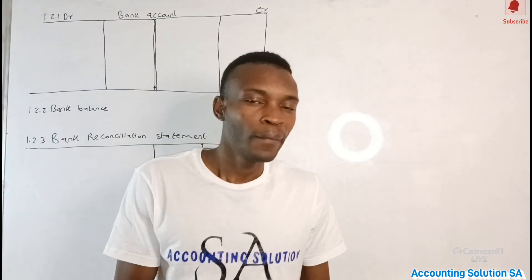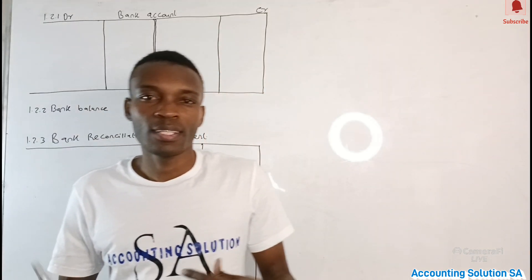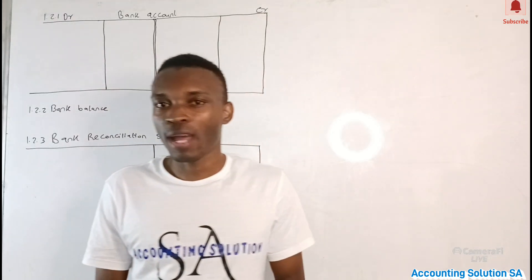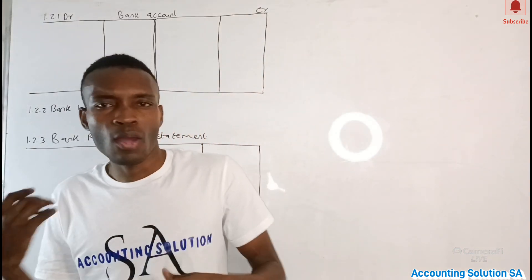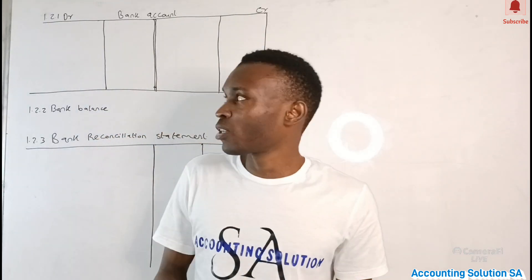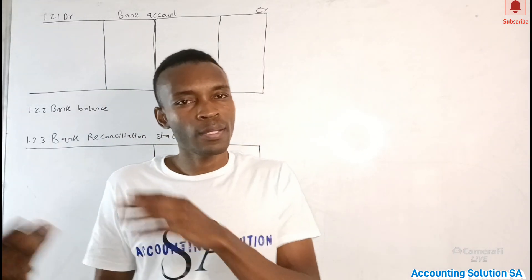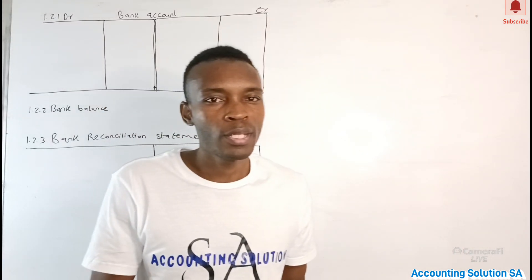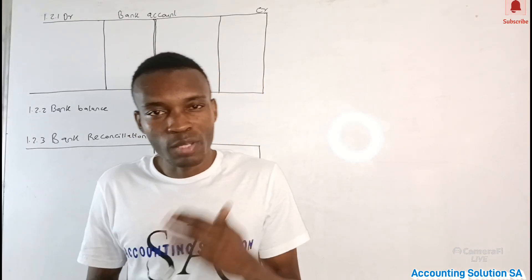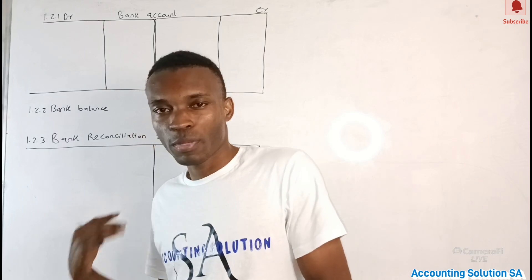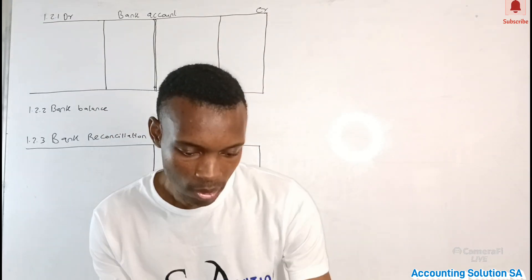In this video I decided to do part two of bank reconciliation statement. Today I come with a two-column format so that you can understand how we are going to treat this principle. We are also going to prepare our bank account, which is the same as cash receipt and cash payment journal. Please make sure that you watch the entire video so that you will understand all the procedures to complete our bank reconciliation statement.